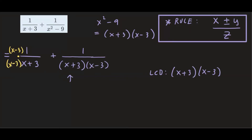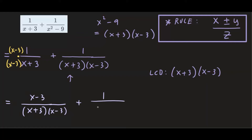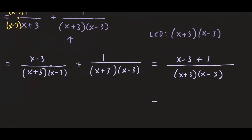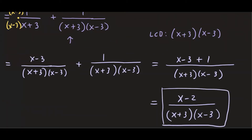Now that I've done that, I can start combining. So 1 times x minus 3 gives x minus 3, over x plus 3 times x minus 3. The second fraction stays as it is since it already has x plus 3 and x minus 3 in the denominator. Now that both have the same denominator, we group them into a single fraction: x plus 3 times x minus 3 on the bottom, and x minus 3 plus 1 on top. Combining like terms, negative 3 plus 1 is negative 2, giving us x minus 2 over x plus 3 times x minus 3. That's our final answer.